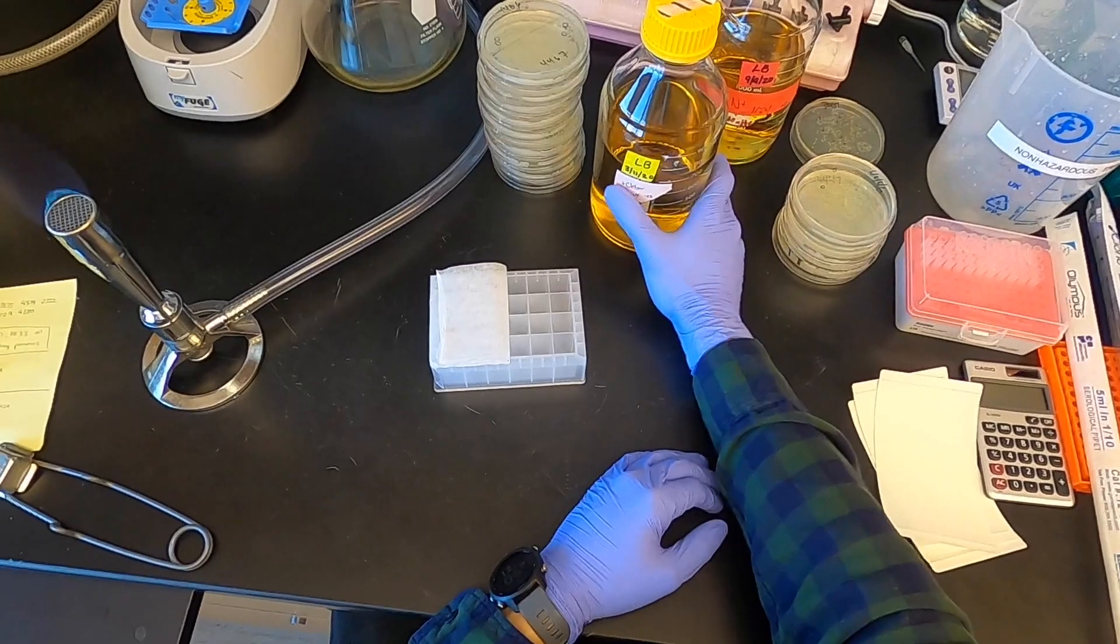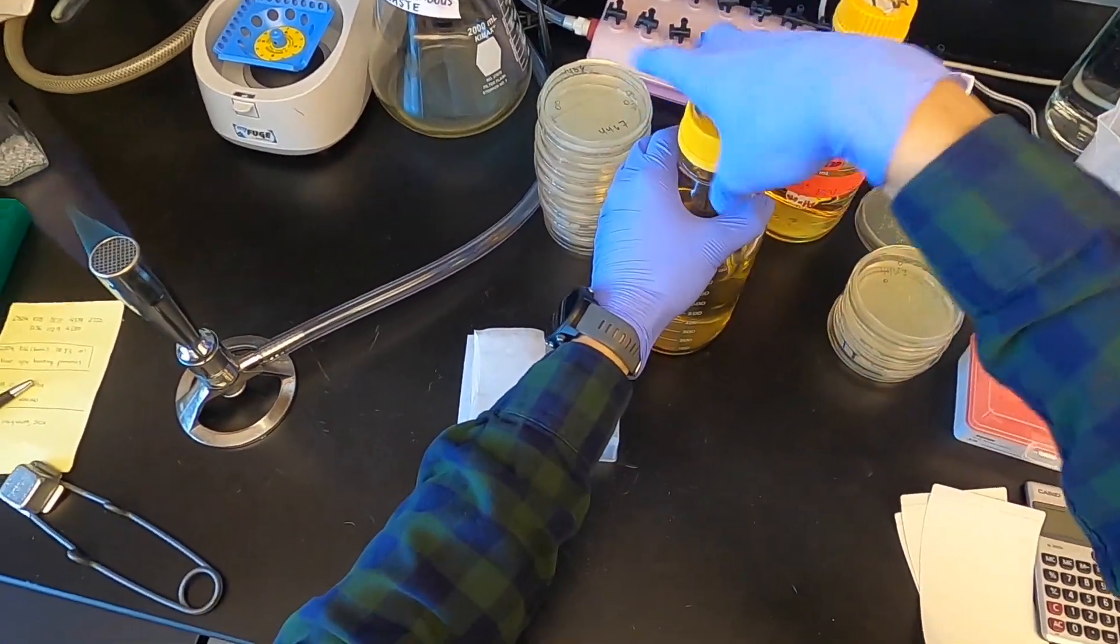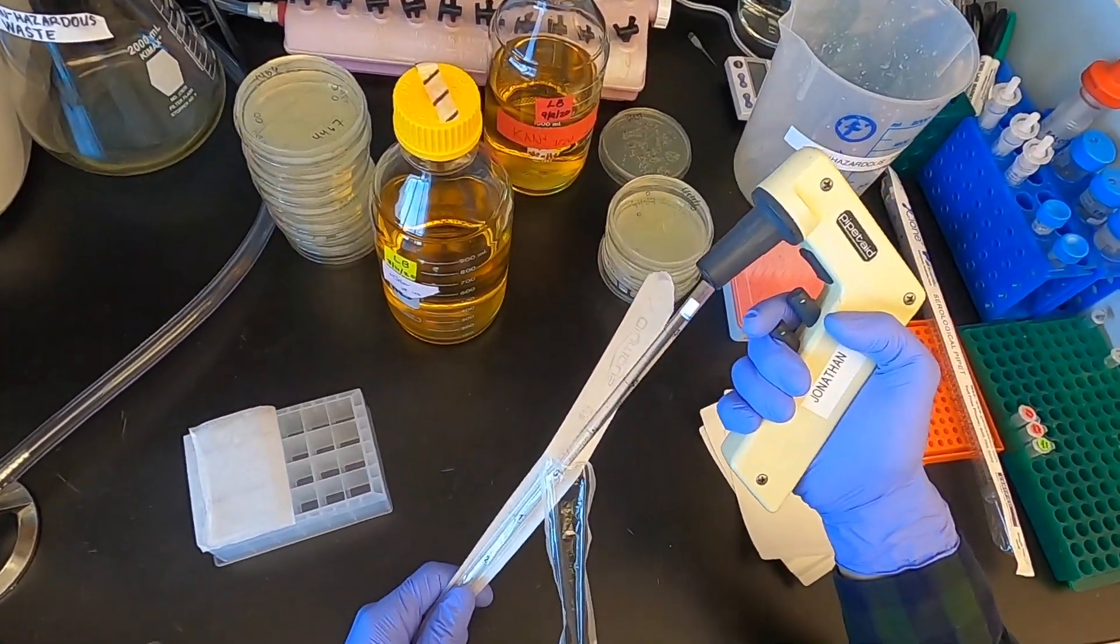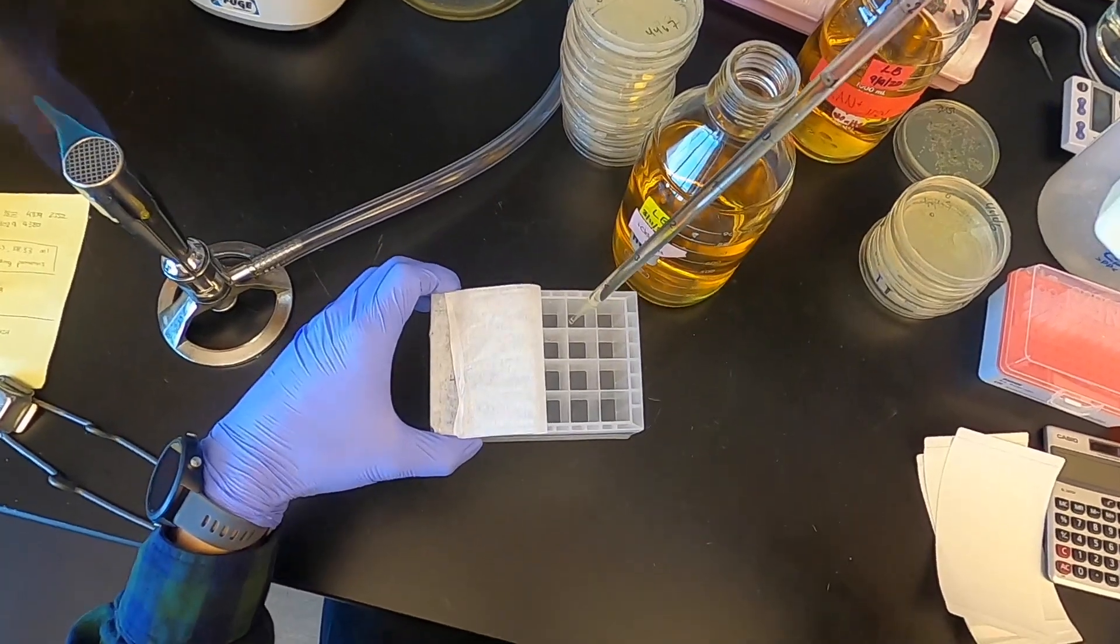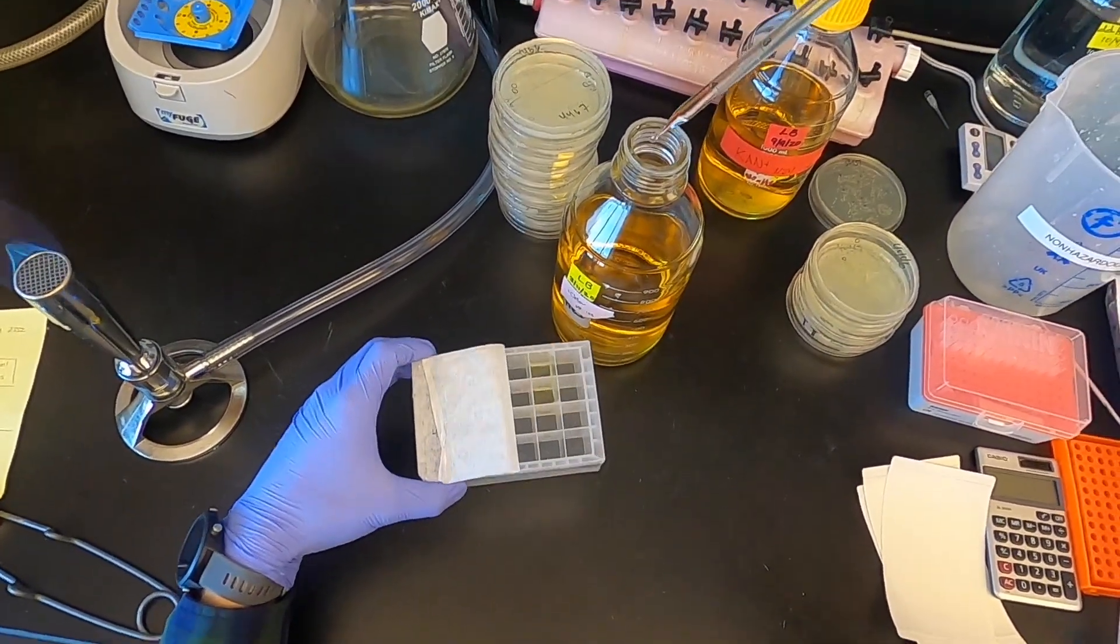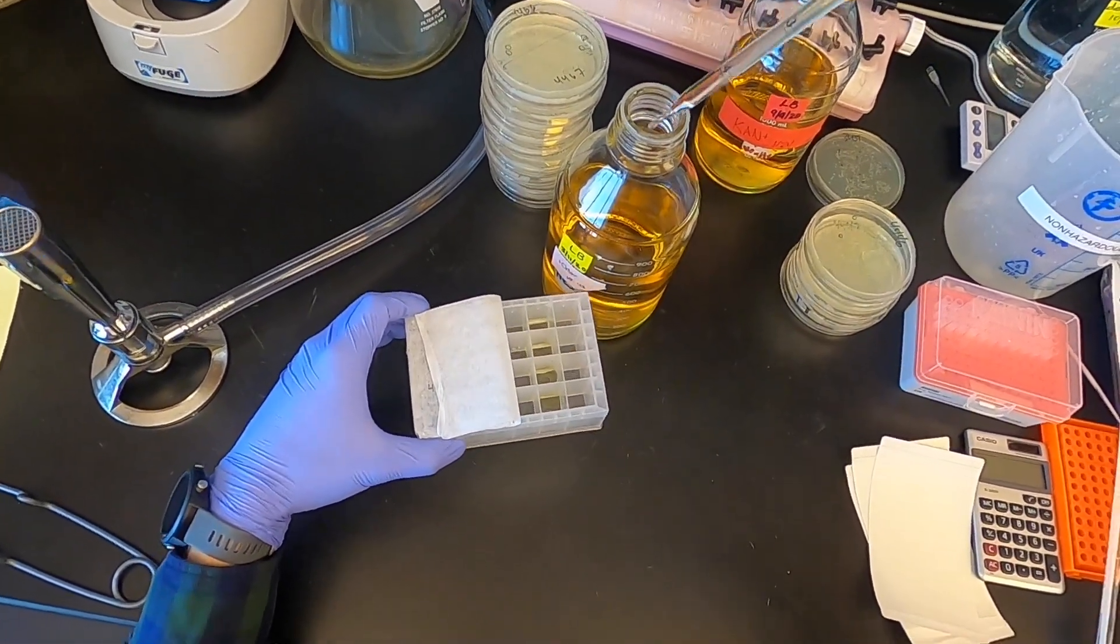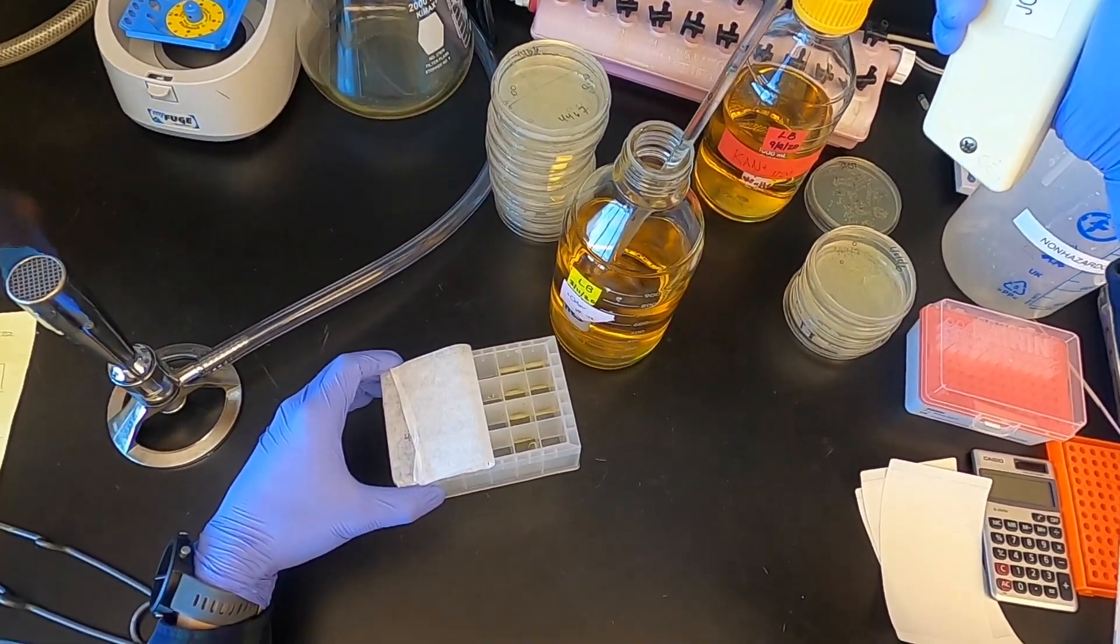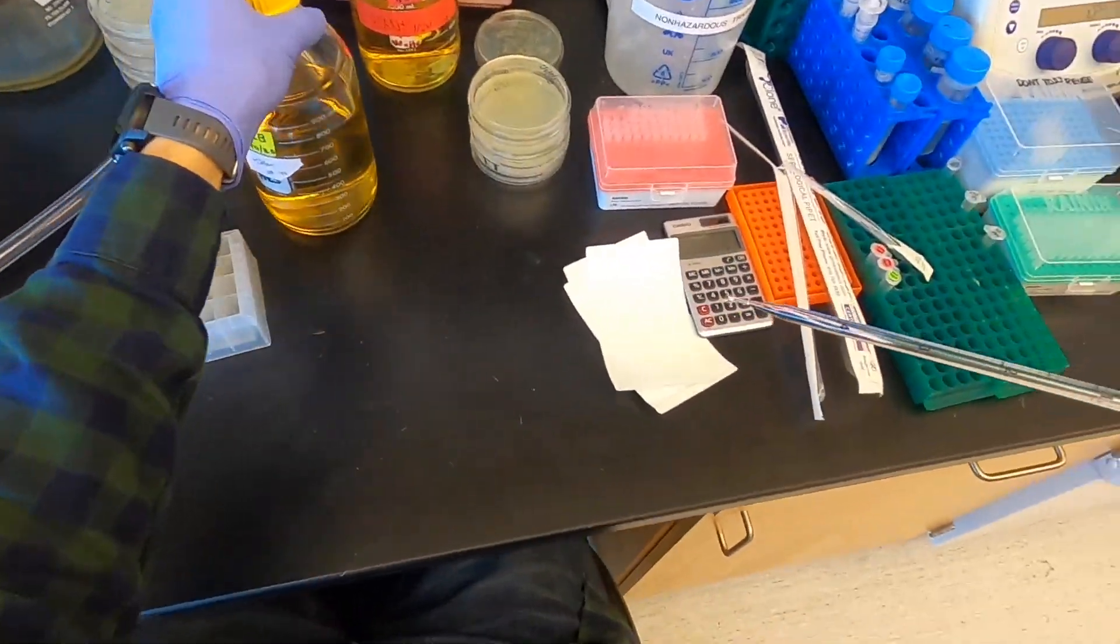I am going to very simply take my LB media containing antibiotic - usually just indicated by plus kan or plus chloramphenicol telling you what antibiotic is in this media. I'm gonna light my Bunsen burner and then put three mils of LB into each well of my block, one well for each colony that I'm gonna pick. I typically pick two colonies for every Golden Gate assembly that I do. So here in this block I'm preparing eight wells for four Golden Gate assemblies that have a chloramphenicol backbone. Doesn't have to be super exact.